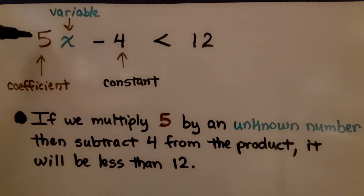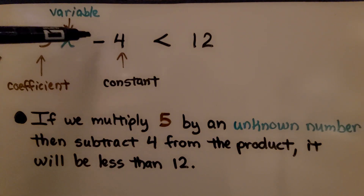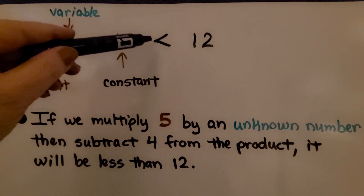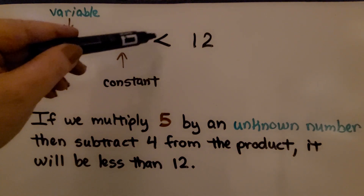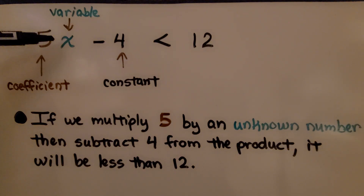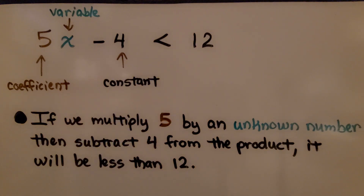The coefficient of the variable x is 5. Our constant is minus 4, and our inequality symbol is less than, with 12 on the right side. This says: if we multiply 5 by an unknown number, then subtract 4 from the product, it will be less than 12.